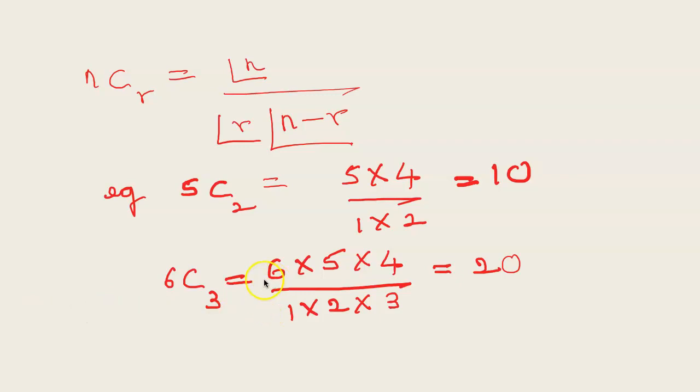Similarly 6C3, we start from 6 go back 3 times and start from 1 and multiply up to 3. So you get 6 into 5 into 4 by 1 into 2 into 3 which is 20.